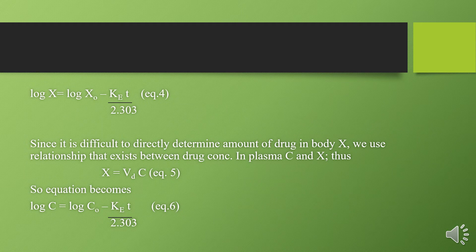Converting to logarithmic form: log X = log X₀ − (Ke·t)/2.303. Since it is difficult to express in terms of amount X, we convert to concentration C. Using the relation X = Vd·C, the equation becomes: log C = log C₀ − (Ke·t)/2.303. By using this equation we can find the slope and plot a graph. This is in the form of y = mx + c.